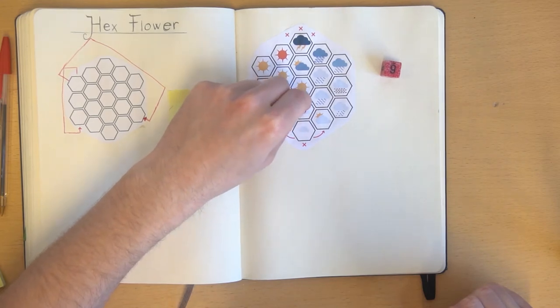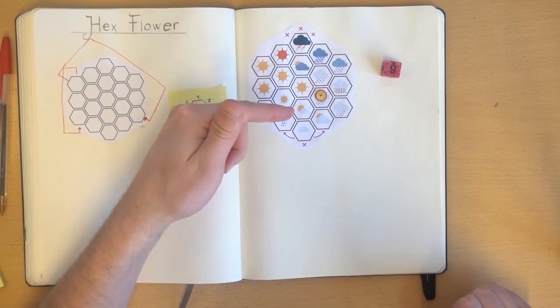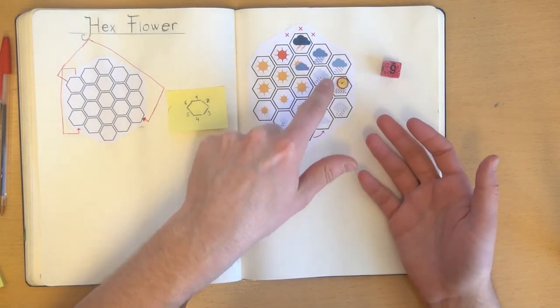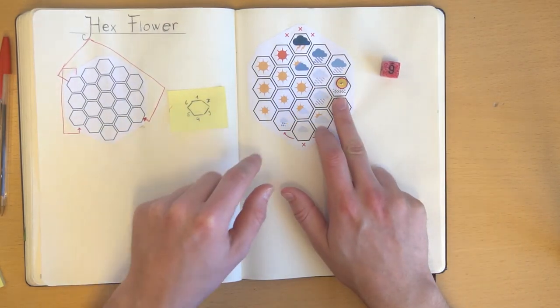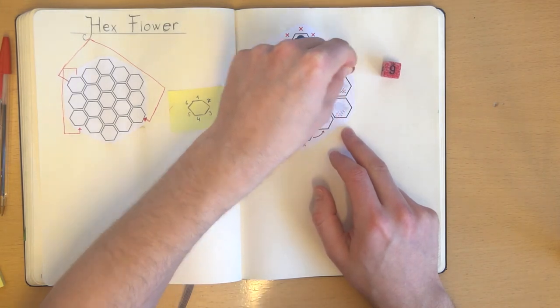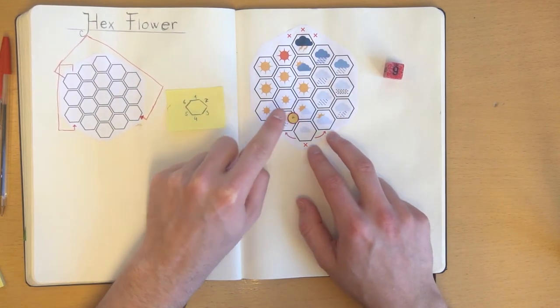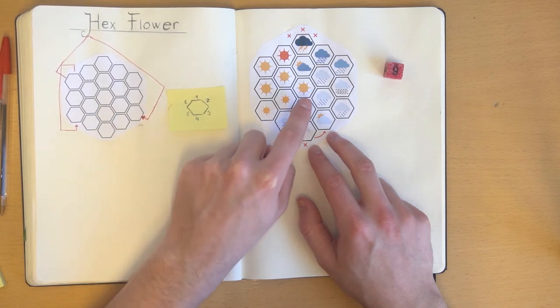These things down here and up here, those mean different things. The X here means that you can't move here. So whenever you roll and if you're here and you end up with a four, you don't move.